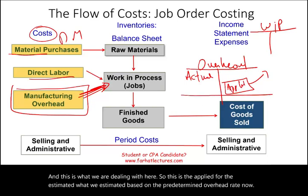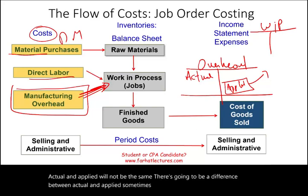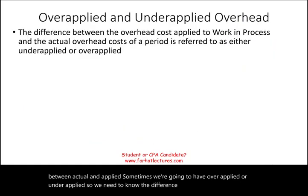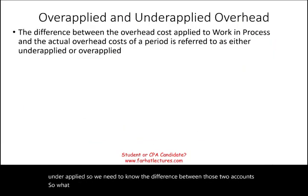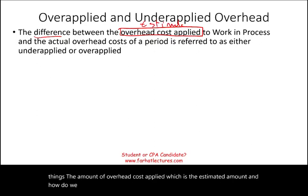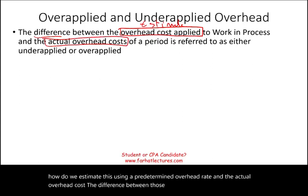Actual and applied will not be the same — there is going to be a difference between actual and applied. Sometimes we will have over-applied or under-applied overhead. Over-applied and under-applied is simply the difference between the amount of overhead cost applied, which is the estimated amount using a predetermined overhead rate, and the actual overhead cost.